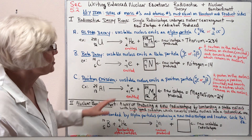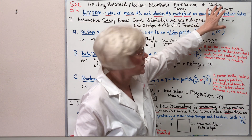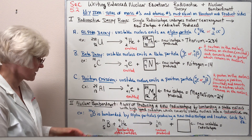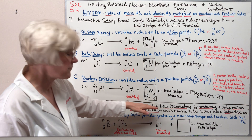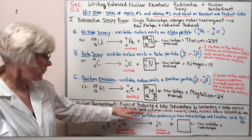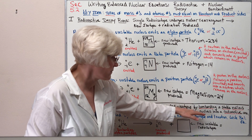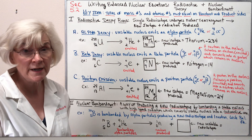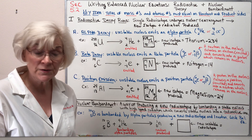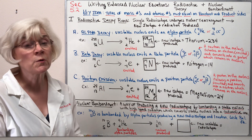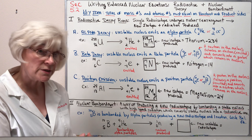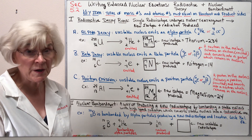We're now going to transition to our second type of nuclear equation: nuclear bombardment equations. Nuclear bombardment is a way of producing a new radioisotope by bombarding a stable nucleus with high-speed radiation, which converts stable nuclei into radioactive ones. This is a standard way of generating radioisotopes needed for healthcare, either for diagnostic purposes or for therapeutic purposes — to diagnose a disease process or to treat it using radioisotopes in a medical therapy process.